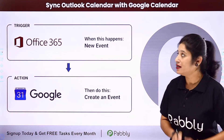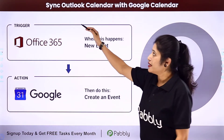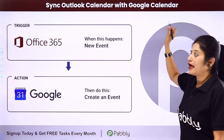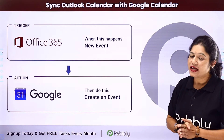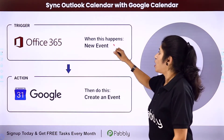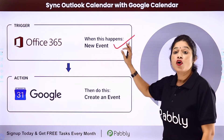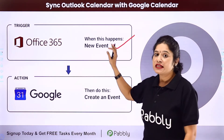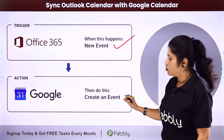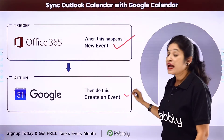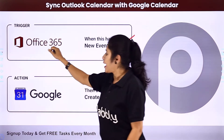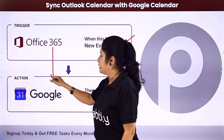In this video, we are going to learn how you can sync Outlook Calendar with Google Calendar. The idea is that whenever a new event is created in your Outlook Calendar, automatically the same event should be created in your Google Calendar also. For that, you need to integrate your Outlook Calendar with Google Calendar.